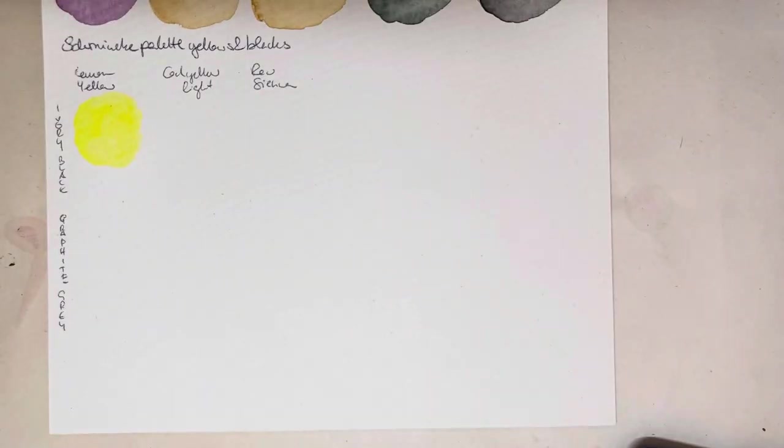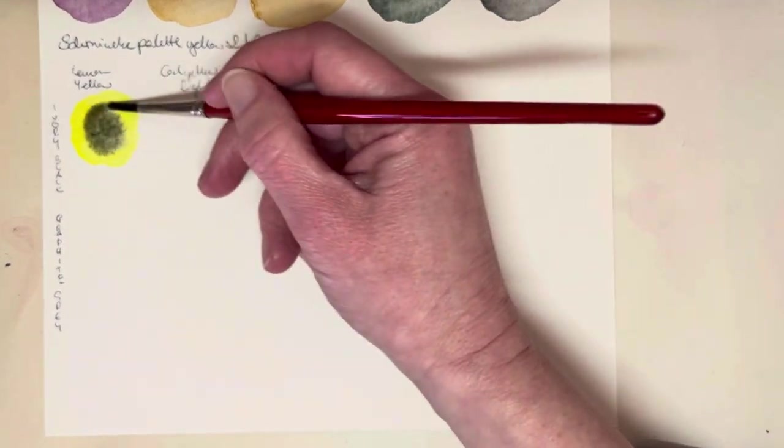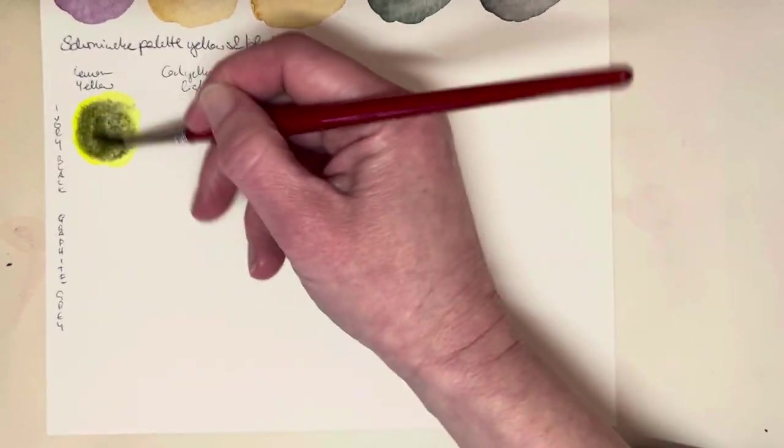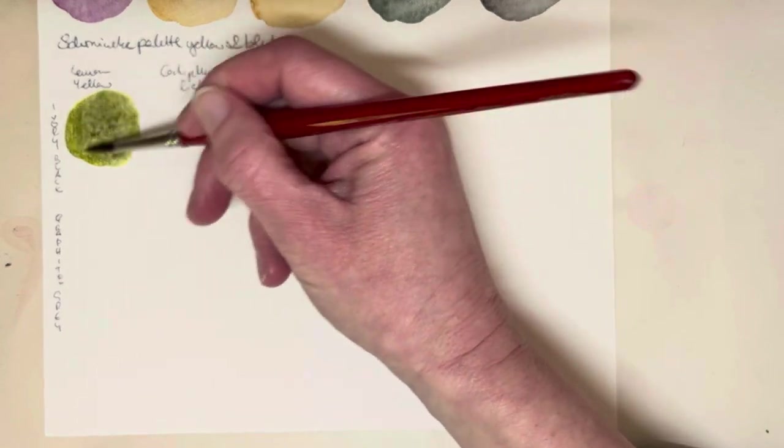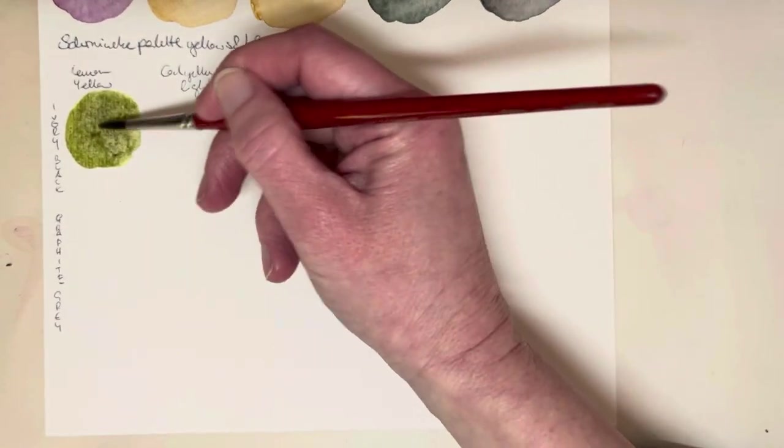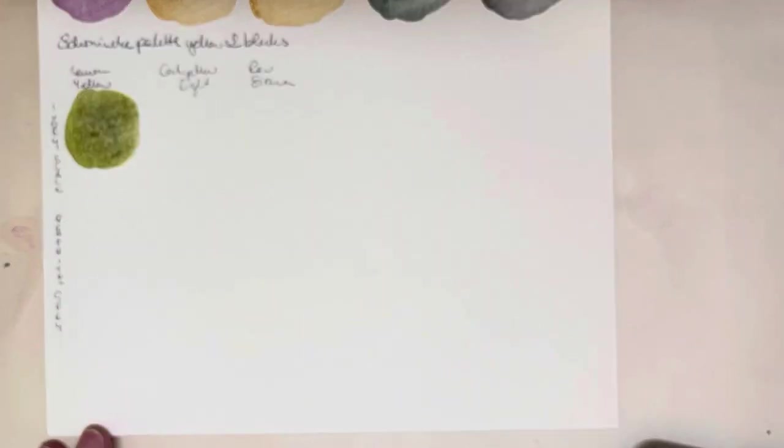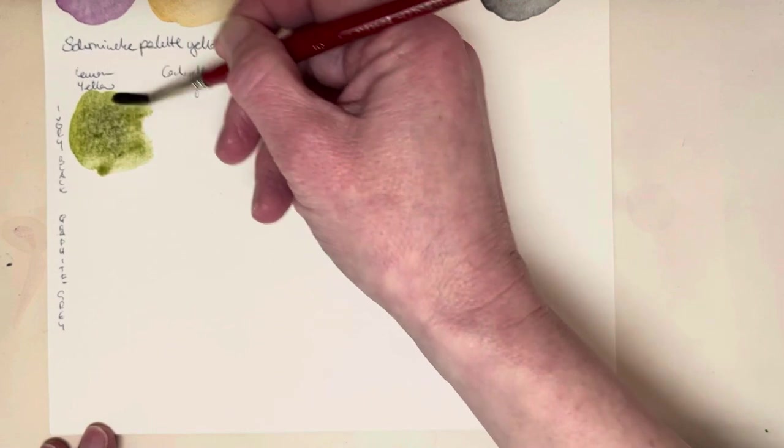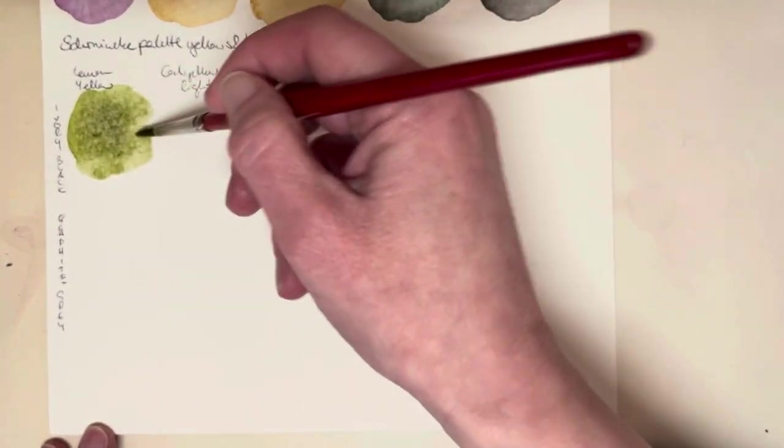This is the lemon yellow PY3 mixed with ivory black PBK9. And you can see this here, you do get something that is like a dark, slightly dirty green, but it's definitely green.